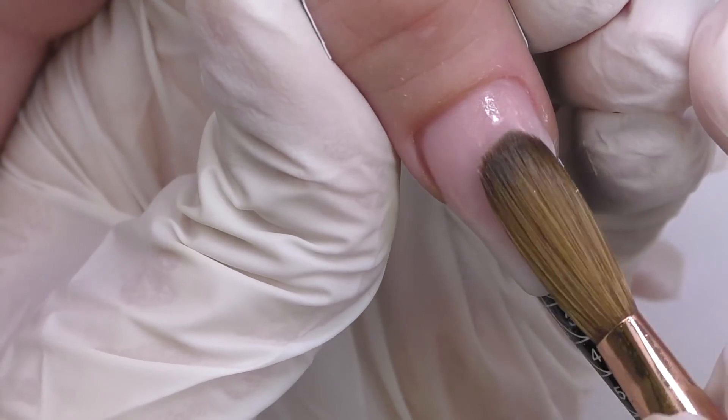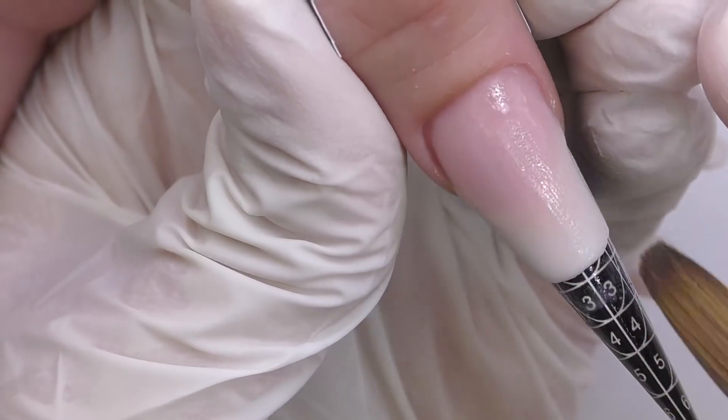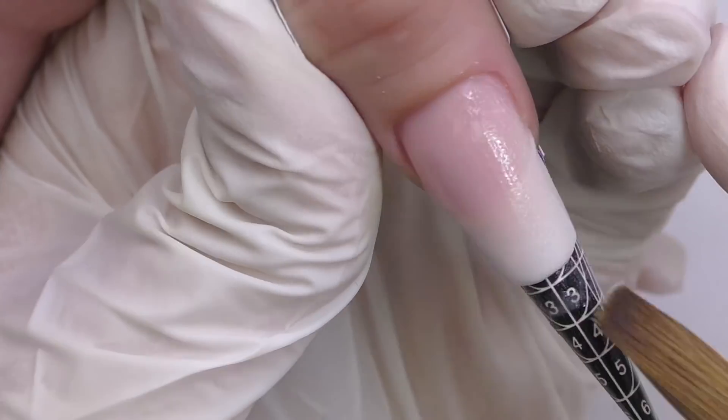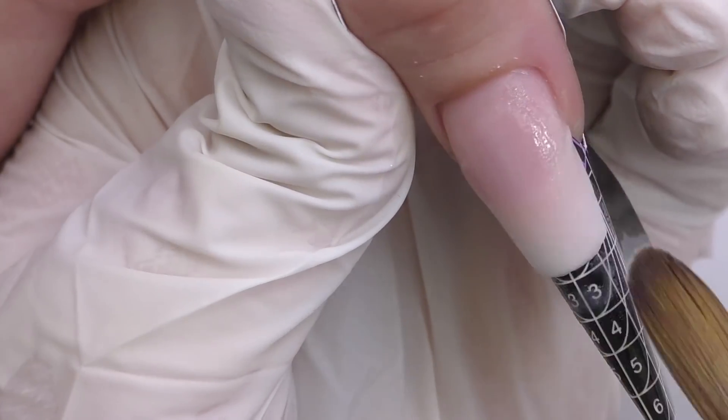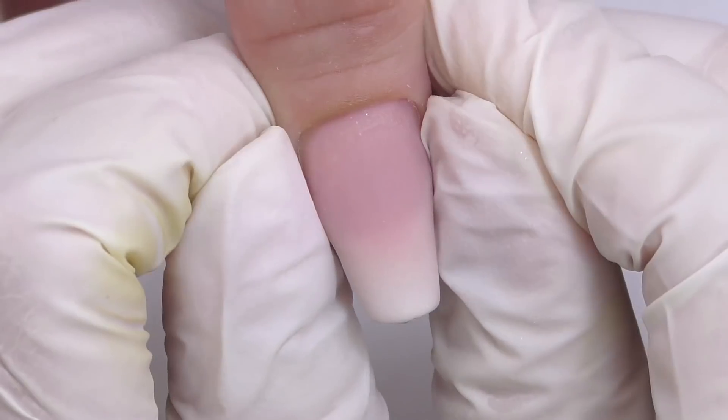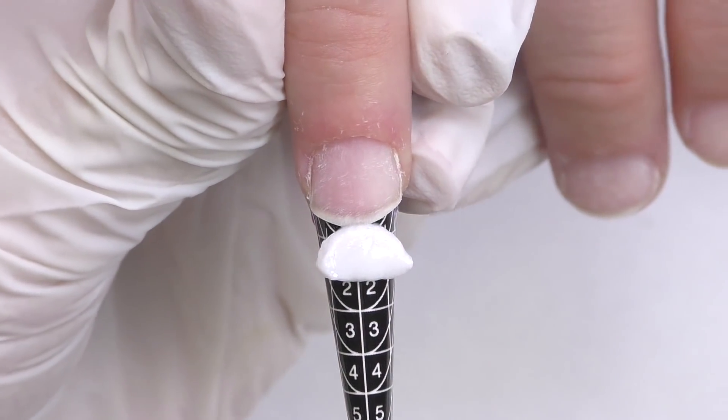So I started blending it a bit more. And if you notice that you blended nude too much, like you do not have this white anymore, you can always clean it before the product is fully set. Now when we're done, since we're working with acrylic, we can carefully take the form off and slightly pinch the nail.